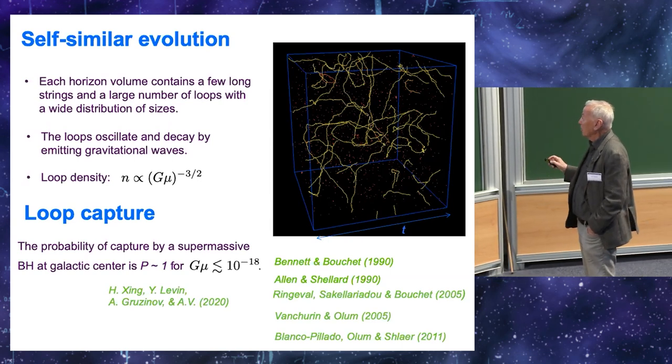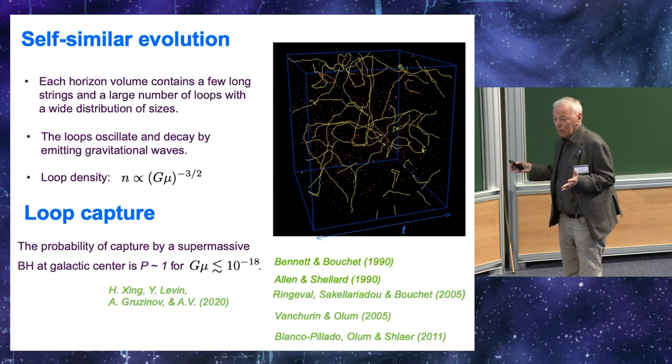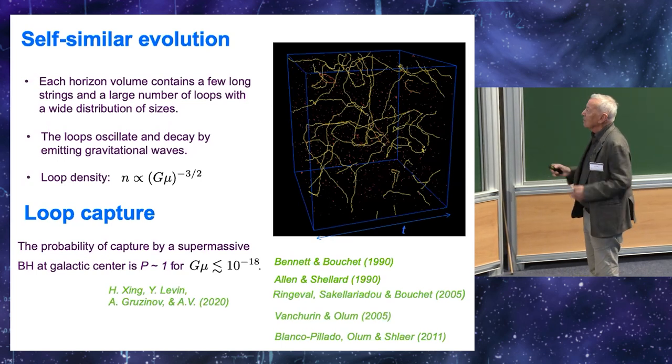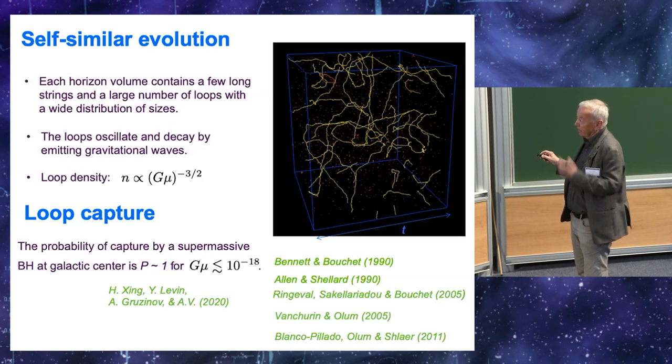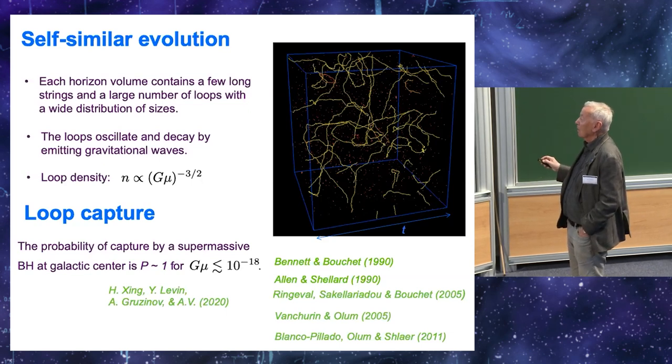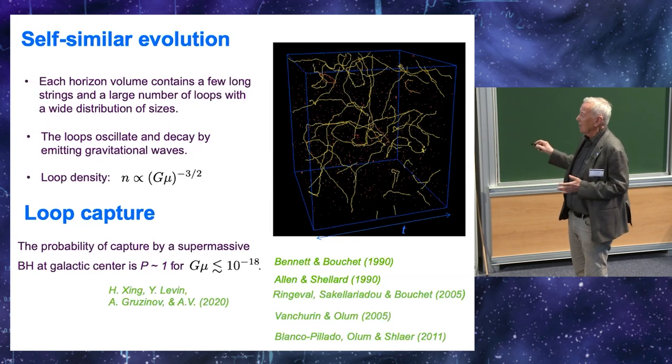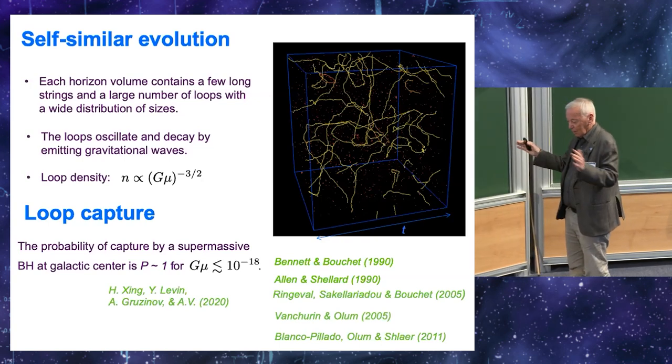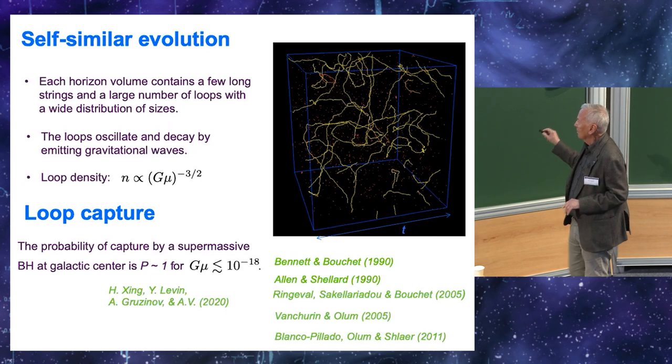We found that the probability of capture, the most probable, it's most probable for a loop to be captured by the supermassive black hole, simply because it has much bigger radius than smaller black holes. And, the probability that a supermassive black hole, say at the center of our galaxy, has captured a loop is of order one if G mu satisfies this condition. If G mu is less than 10 to the minus 18. And, I don't give the details of this calculation because you have to include the fact that the loops concentrated galactic halos. And, then their density increases towards the center. So, when you include all that, you find this condition.